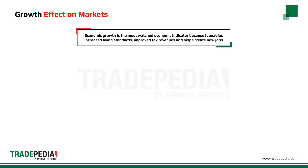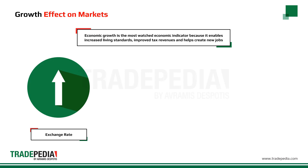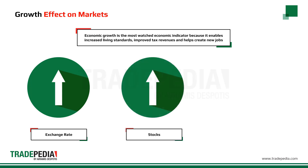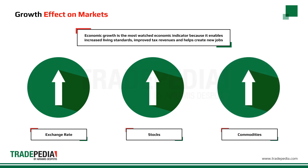All else equal, higher output and higher income will increase the revenue of governments and thus the value of their currency. When it comes to stocks, an increase in growth reflects increasing consumer demand, which results in higher profits for businesses and higher stock prices. Because businesses are producing more, their demand for commodities like raw materials and energy will increase, resulting in higher commodity prices.